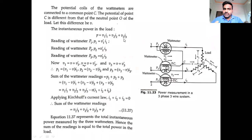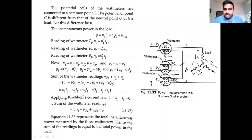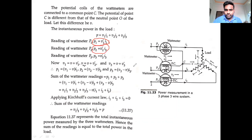If we observe the reading of the wattmeters: P1 = V1'·I1, P2 = V2'·I2, and P3 = V3'·I3. So the power flowing through wattmeter 1 is V1'·I1, through wattmeter 2 is V2'·I2, and through wattmeter 3 is V3'·I3.